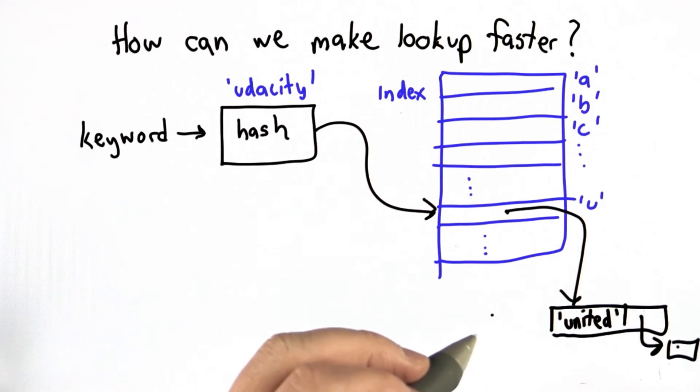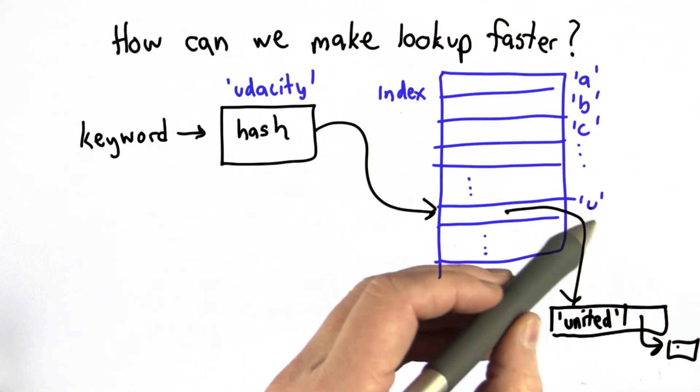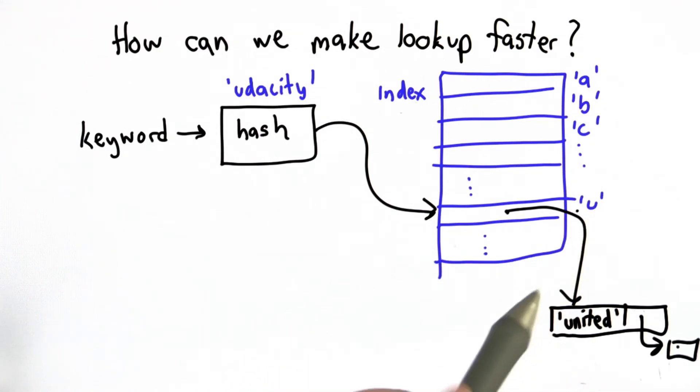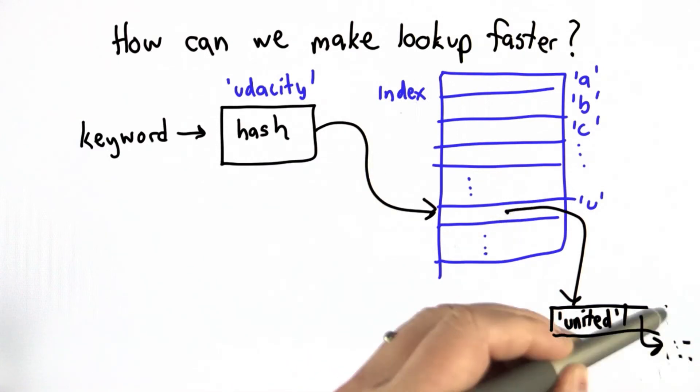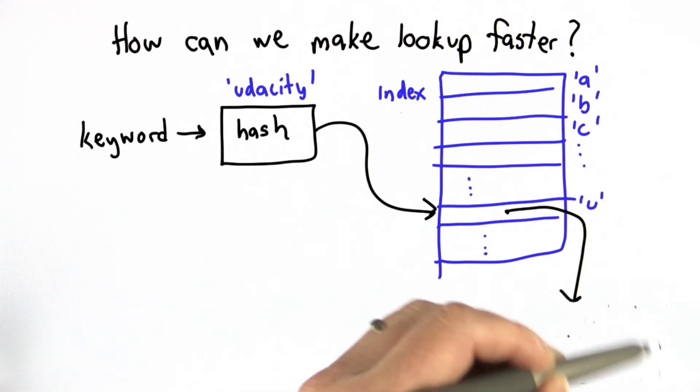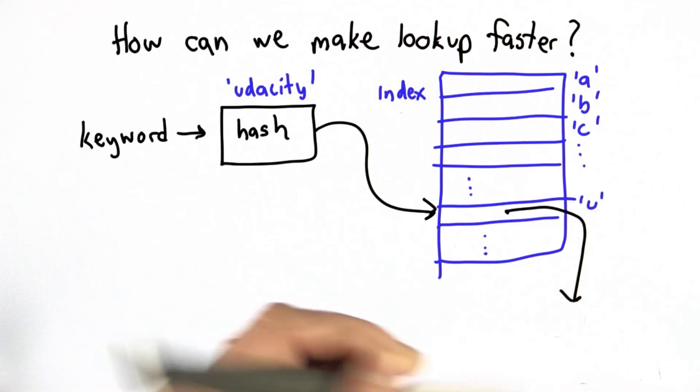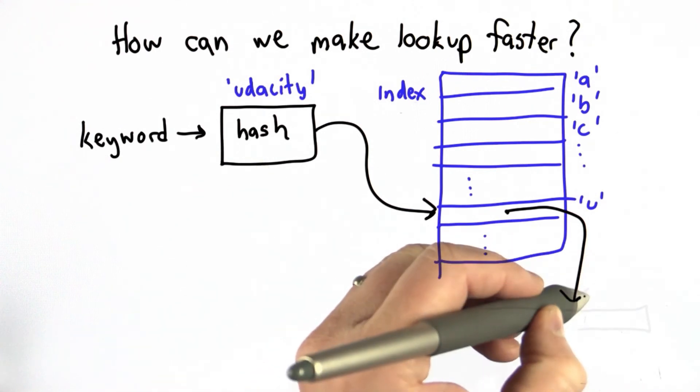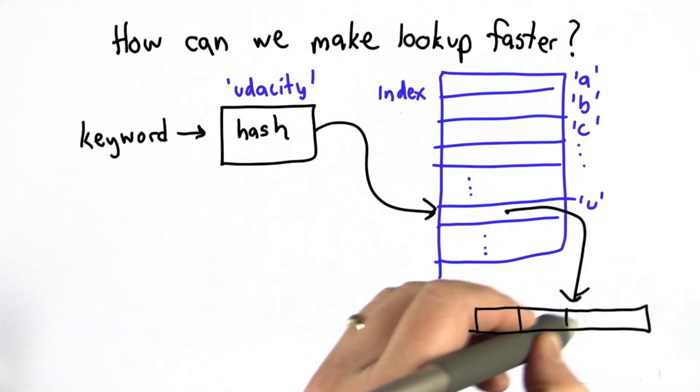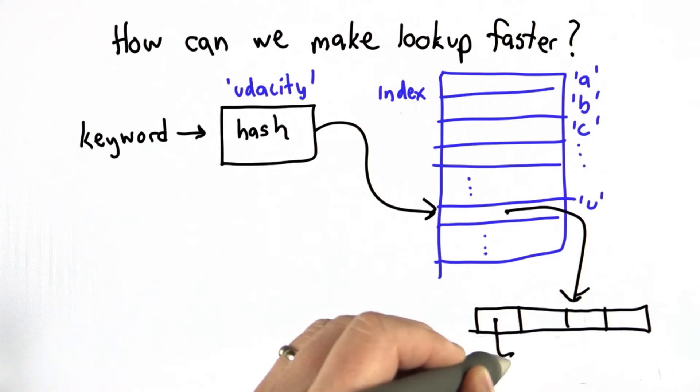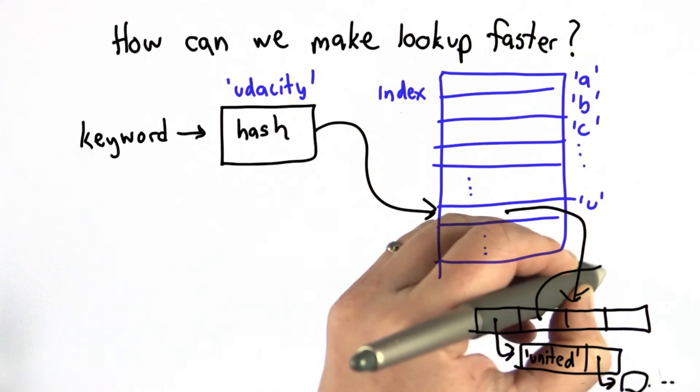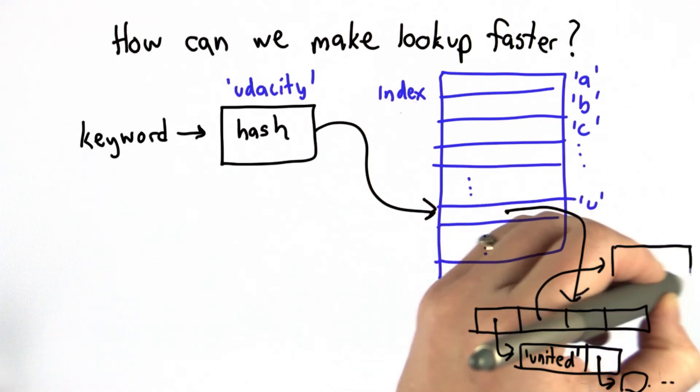We often call this a bucket. So we need a bucket of all the entries that start with U that would be in this position. So instead of having just one entry, like the old structure of our index, now we're going to have a list of entries. And each element of the index will now be a bucket, which is a list of entries that are in the right position. This is going to be our bucket of all the entries that start with U. And that would have all the different entries that start with the letter U in that bucket.